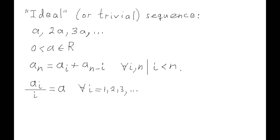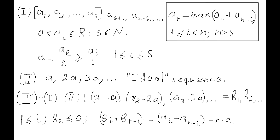We will call a member a_i a winner if for all n starting with some number in this sequence, a_n equals a_i plus a_{n-i}. Obviously, in an ideal sequence each member a_i is a winner. Consider a sequence of arbitrary positive real numbers a_1, a_2, etc. up to a_s, followed by numbers a_{s+1}, a_{s+2}, etc. that are calculated based on the formula shown on the diagram. Each next member equals the largest sum of a_i plus a_{n-i}, where i varies from 1 to n minus 1.